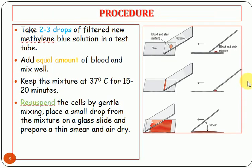Procedure: take two to three drops of the filtered new methylene blue stain in a dark bottle, then add the same volume of blood into the tube and mix well. Incubate at 37°C for 15 to 30 minutes. After incubation, resuspend the cells by gentle mixing. Take a drop of the mixture on a slide, use another slide as a spreader at an appropriate angle, and push forward to make a smear — the same technique as for a peripheral blood film.